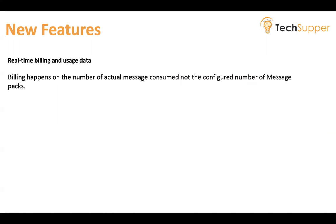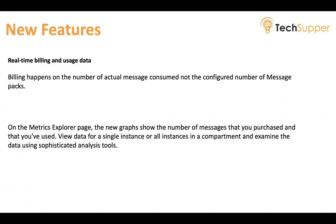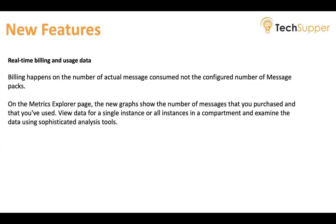This is again an important feature: real-time billing and usage data. As of now this is not applied but will be applied soon. Billing will happen on the actual usage, not the configured number of messages packed. On the Metric Explorer page, a new graph shows the number of messages that you have procured and the number of messages you have used. You can view data for a single instance or all instances in a compartment and examine the data using a sophisticated analysis tool.